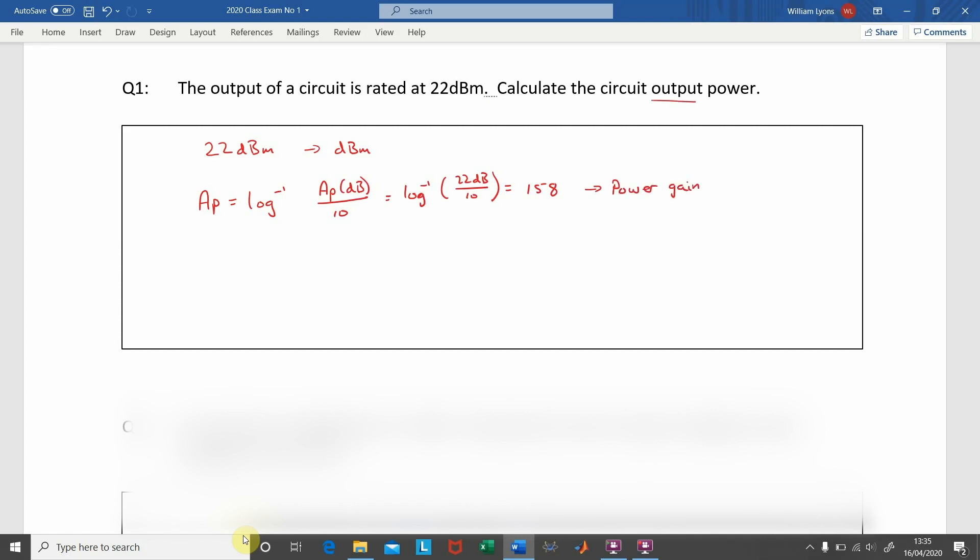Now that we have calculated the power gain, we can calculate the output power. The output power, Pout, is calculated by getting the power gain and multiplying it by the input power. We know that dBm is with reference to 1 milliwatt, so this becomes 158 times 1 milliwatt, which results in an output power of 158 milliwatts.